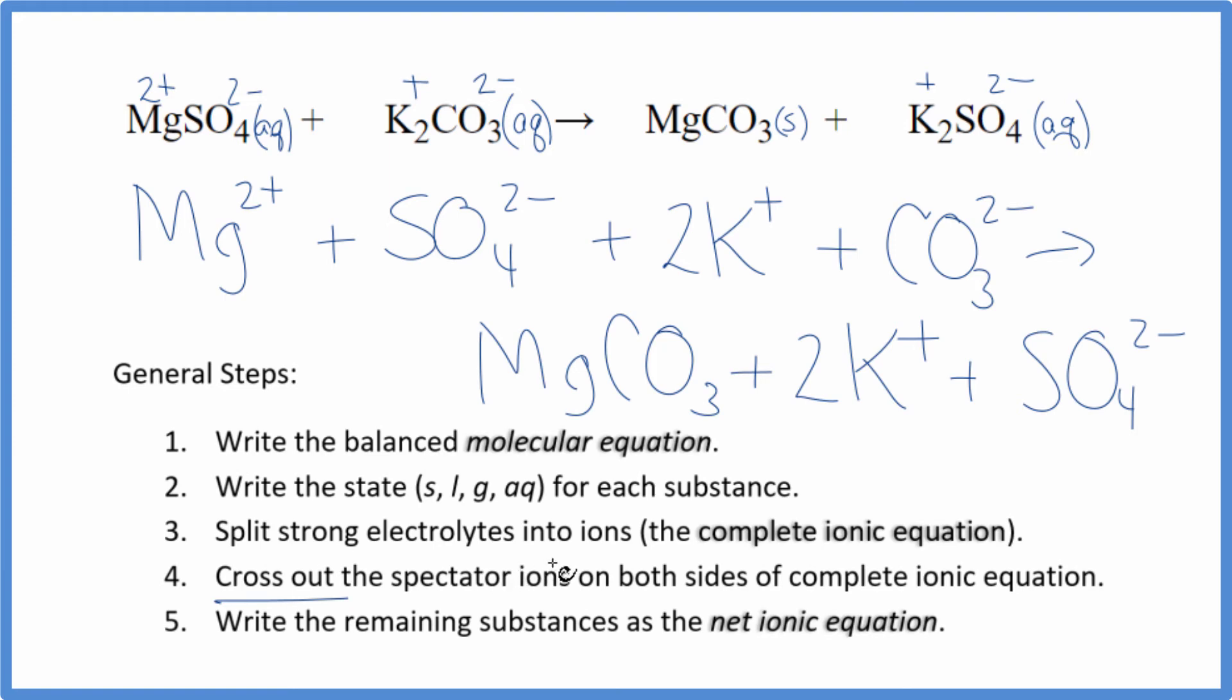Now we can cross out spectator ions. They're on both sides of the complete ionic equation. So as I look at the reactants and the products, I can see I have a sulfate ion right here in the reactants and in the products. That goes. 2 potassium ions in the reactants and in the products. Get rid of that.